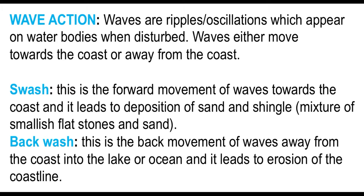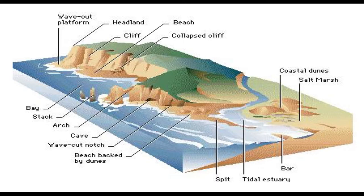In these processes we have two types: the swash that moves towards the coast causes what we call wave deposition features, and the backwash causes what we call wave erosion features. In this illustration we can see a coastline with a mix of deposition and erosion features highlighted.